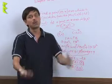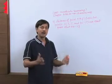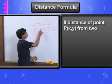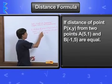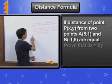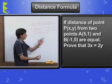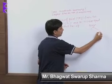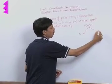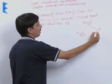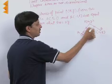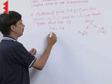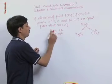Now we will use more applications of the distance formula. The next important example: if the distance of point P(x, y) from two points A(5, 1) and B(−1, 5) are equal, then prove that 3x = 2y. Let P be the point with coordinates (x, y). The coordinates of A are (5, 1) and B are (−1, 5). Since PA = PB, we have PA² = PB² by squaring both sides.